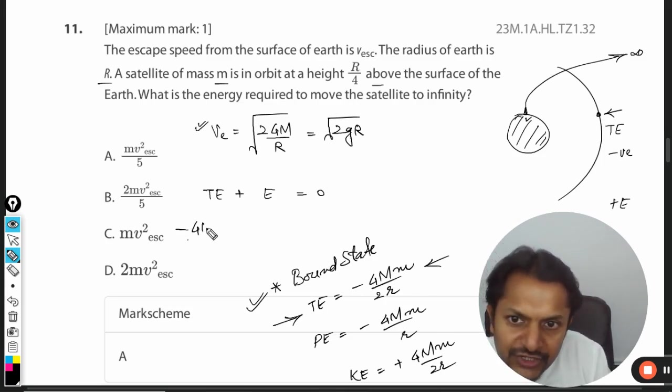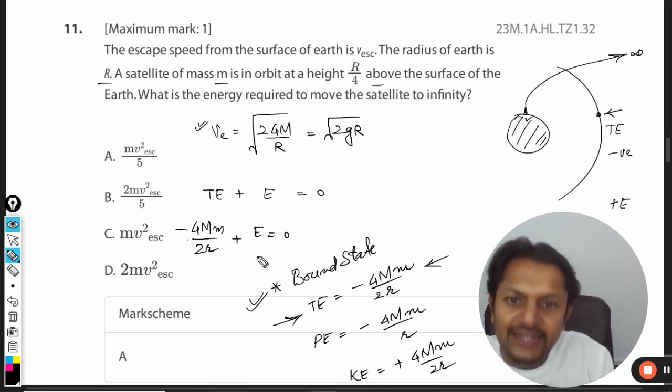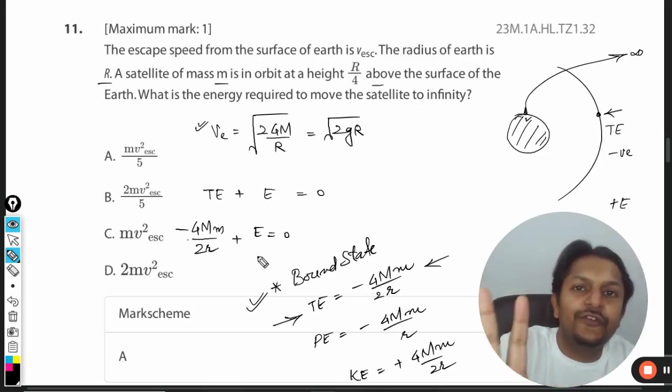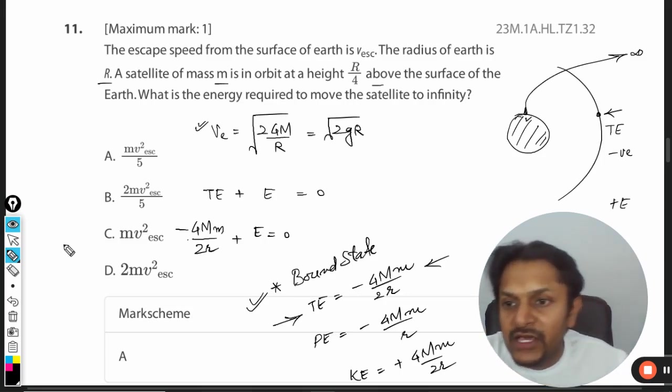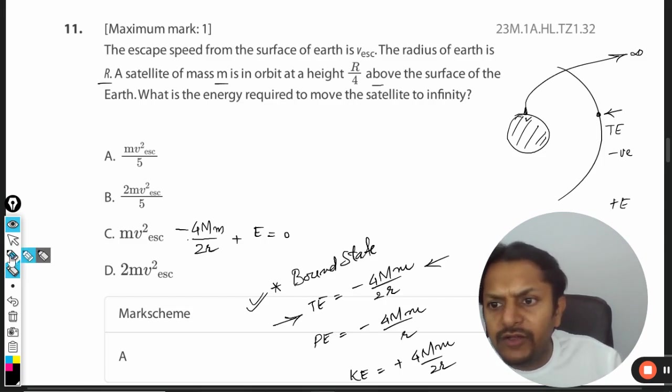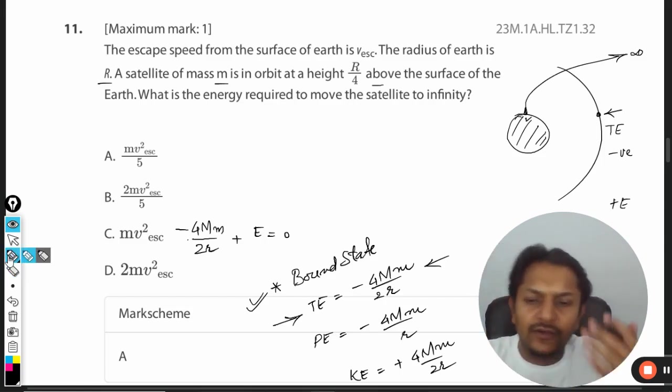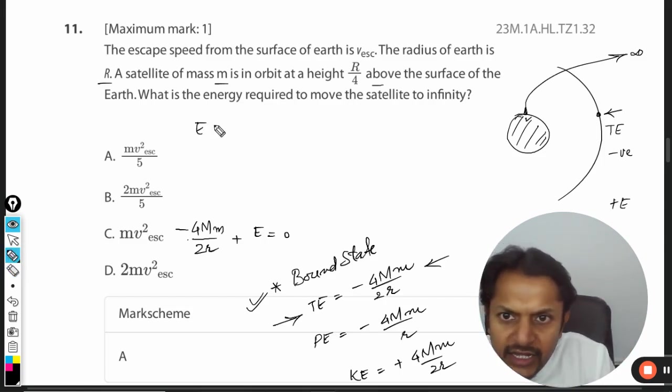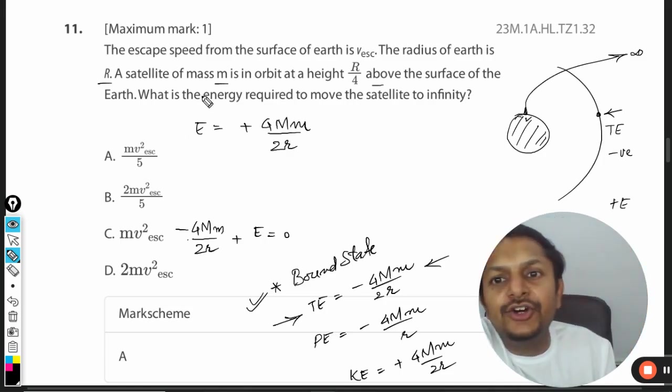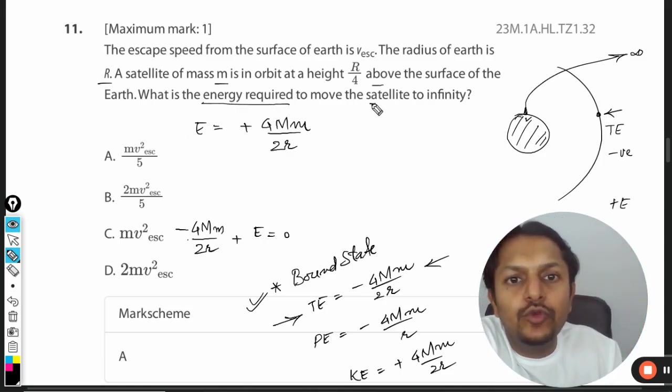Now substitute the total energy: -GMm/2r + E = 0, where E is the excess energy provided from outside. From here, we find the value of E. So E = GMm/2r. This is the energy required to move the satellite to infinity.